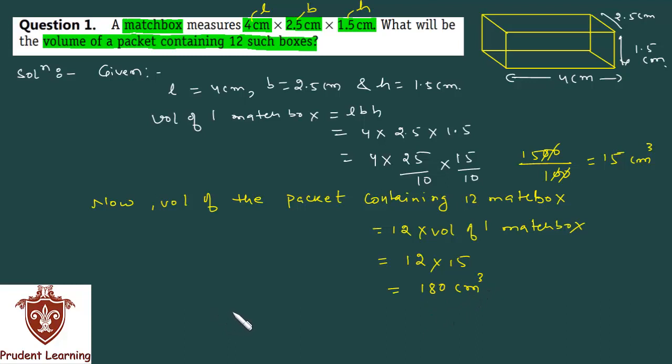Hence, we can say that the volume of the packet containing 12 matchboxes is 180 cm cube. This completes our solution. Let us see the next problem.